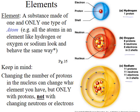A key point is to understand that we define atoms partially by the number of protons. So hydrogen always has one proton. If we change the number of protons — if you take hydrogen and add another proton, giving it two protons — it would no longer be hydrogen; it would then be helium. So changing the number of protons in the nucleus changes the element you're dealing with. But that does not happen with the number of neutrons or electrons. If you add another electron or a neutron to hydrogen, that's still a hydrogen atom. But when you start changing the number of protons, you're going between elements.